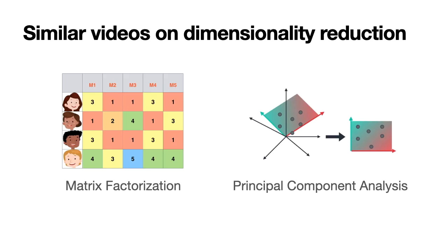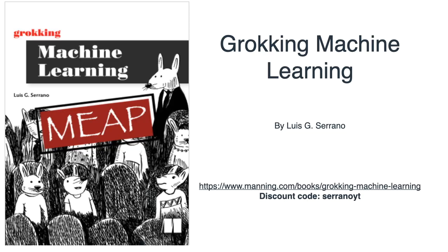And that is it for singular value decomposition. If you like this technique, I highly recommend my other videos on similar dimensionality reduction topics — there's one on matrix factorization and one on principal component analysis; the links are in the description. I'd also like to remind you that I have a book called Grokking Machine Learning, where I explain supervised learning algorithms and interesting machine learning techniques with simple real-life examples and lots of Python code. You can get it from Manning.com with the special discount code SeranoYT for a 40% discount.